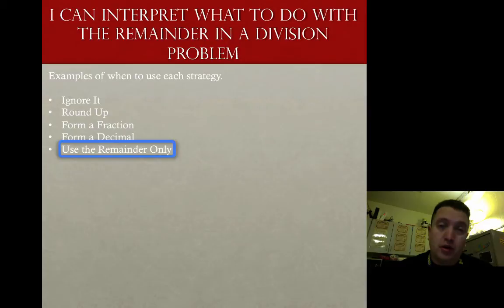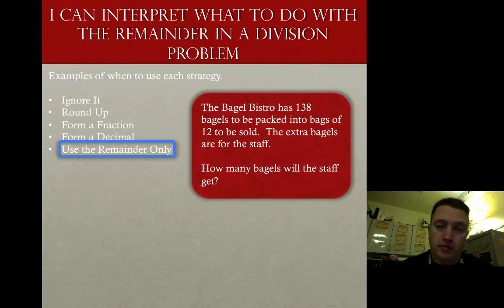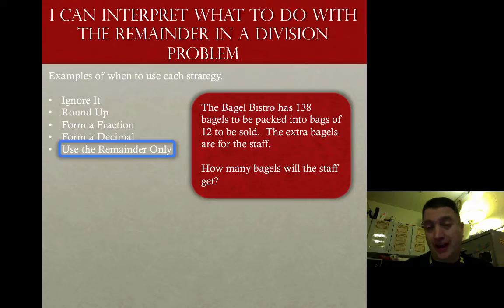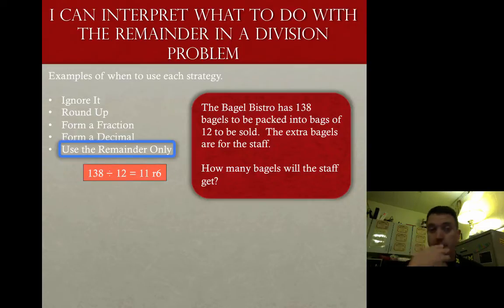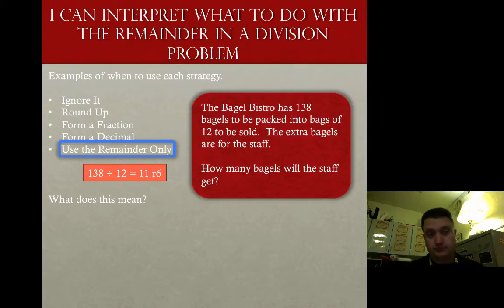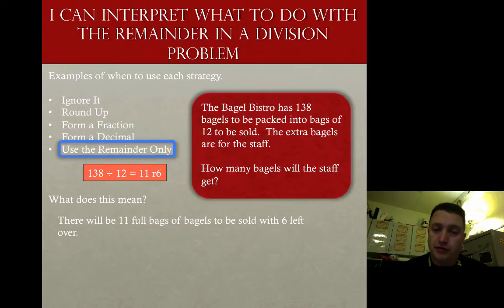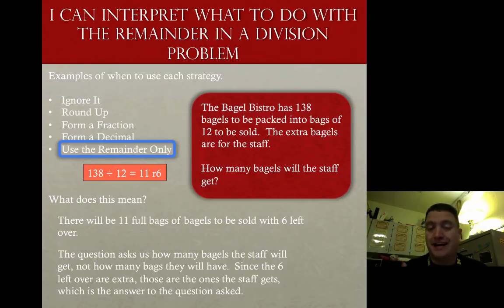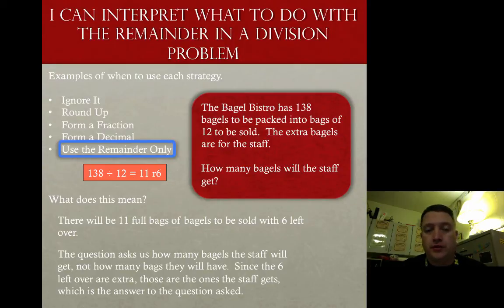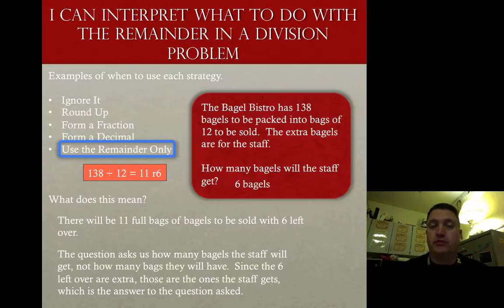The last strategy is use the remainder only. The Bagel Bistro has 138 bagels to be packed into bags of 12 to be sold. The extra bagels are for the staff. How many bagels will the staff get? Taking 138 divided by 12 gives 11 bags with a remainder of 6. That means 11 full bags to be sold with six left over. The question asks how many bagels the staff gets — not how many full bags — so the answer is six bagels, which is the remainder.